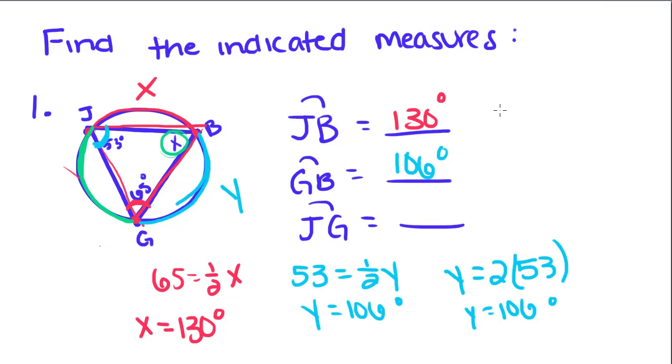We know that the measures of the angles on the inside of a triangle has to be 180. So we're going to take 53 plus 65 plus X and set it equal to 180. If you add these two up, you get 118 plus X equals 180. If you subtract 118 over, you'll get X equals 62 degrees.